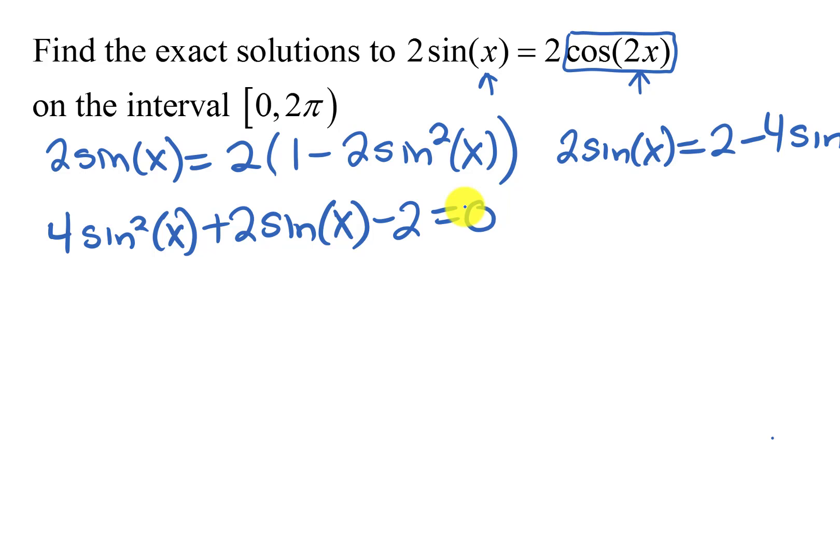Now there's a 2 in everything so I could divide everything by 2 to reduce that. That's going to leave me with a 2 sine squared x plus a sine x minus 1 equals 0.